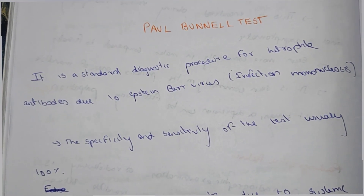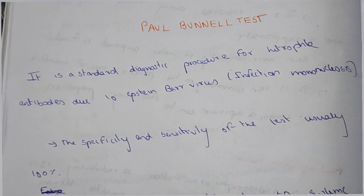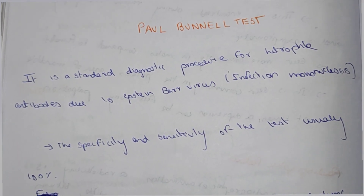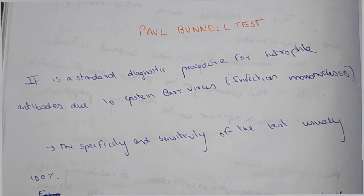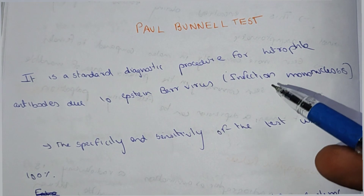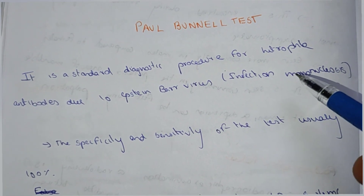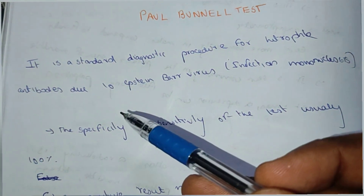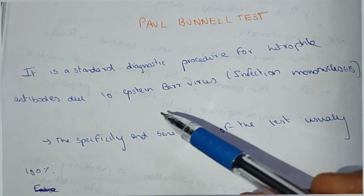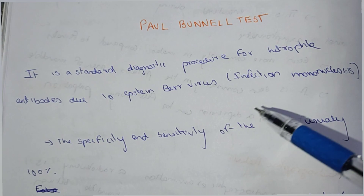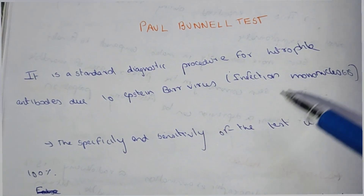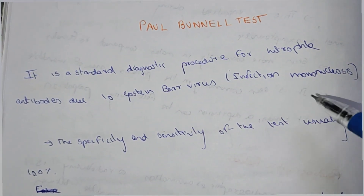Hi everyone, welcome to Medicine Not YouTube channel. In this video we are going to see about the Paul-Bunnell test. The Paul-Bunnell test is a standard diagnostic procedure for heterophile antibodies due to Epstein-Barr virus. This is the major test which is used to find the Epstein-Barr virus.